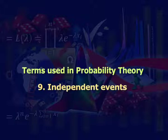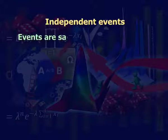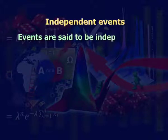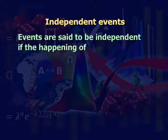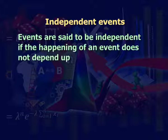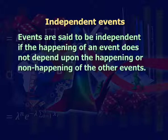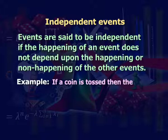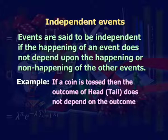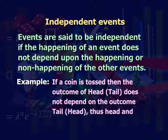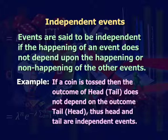Ninth: independent events. Events are said to be independent if the happening of an event does not depend upon the happening or non-happening of the other events of the experiment. For example, if a coin is tossed, then the outcome of head or tail does not depend on the other. Thus head and tail are independent events.